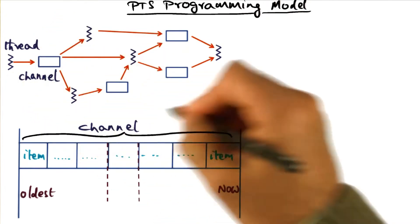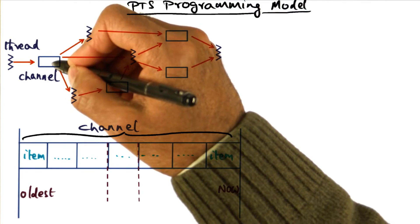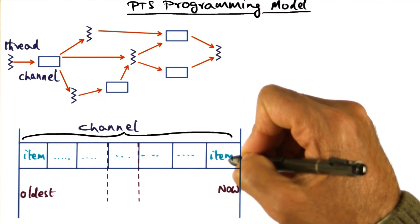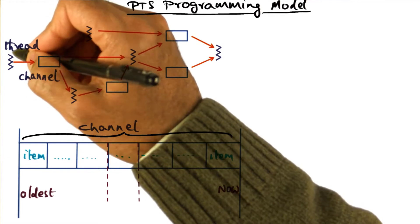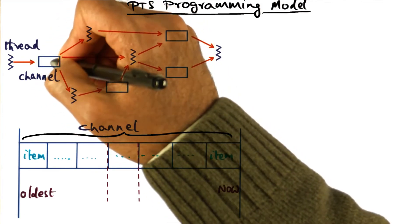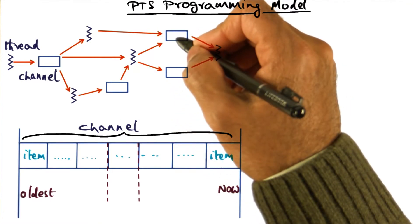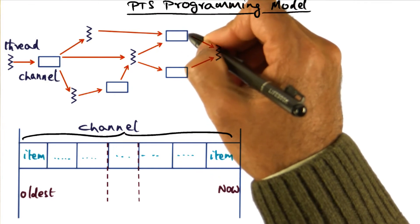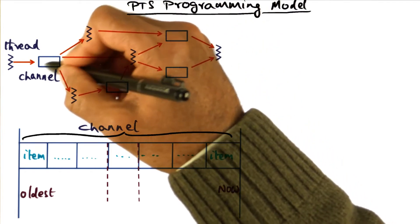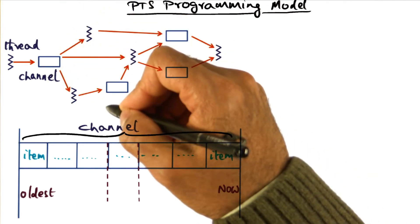While the computation graph looks similar to a process socket graph, the semantics of the channel abstraction is very different from the socket abstraction. In particular, what the channel holds are time sequenced data objects. A thread generating time sequence data objects can place those objects into the channel. You would also notice from the structure of this computation graph that there could be multiple producers of data going into a given channel, and similarly multiple consumers getting data from a given channel. In other words, the channel allows many-to-many connections.